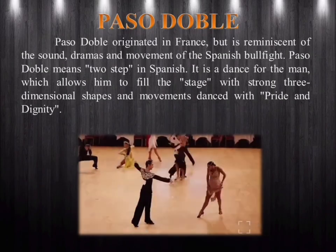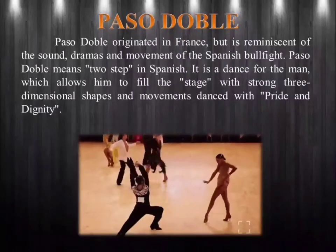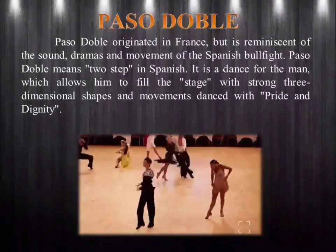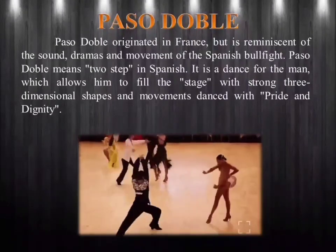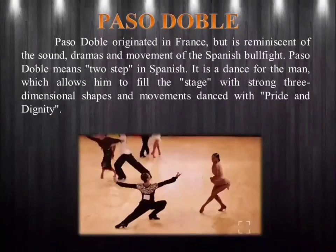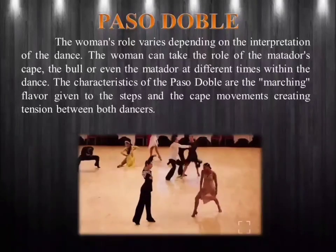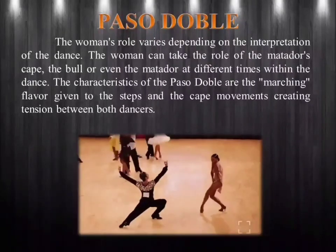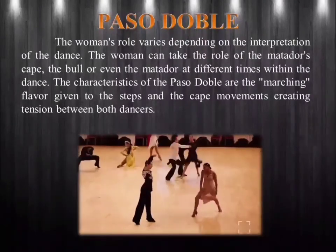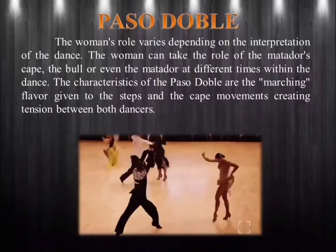Paso Doble originated in France, but is reminiscent of the sound, drama, and movement of the Spanish bullfight. Paso Doble means two-step in Spanish. It is a dance for the man, which allows him to fill the stage with strong three-dimensional shapes and movements danced with pride and dignity. The woman's role varies depending on the interpretation of the dance — she can take the role of the matador's cape, the bull, or even the matador at different times within the dance. The characteristics of the Paso Doble are the marching flavor given to the steps and the cape movements creating tension between both dancers.